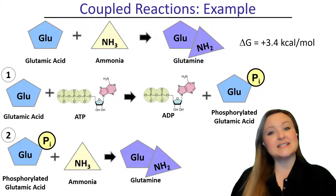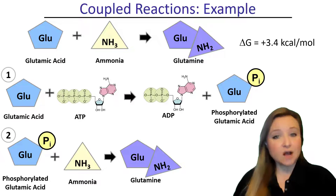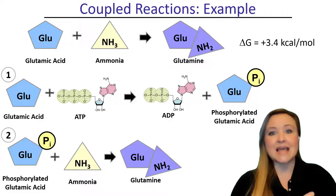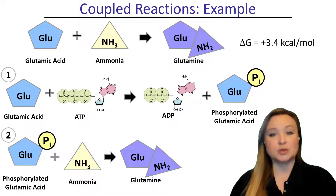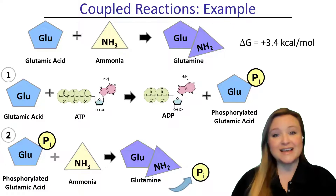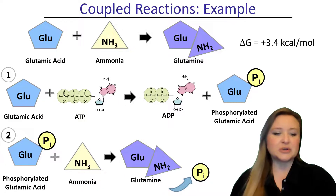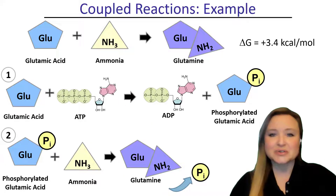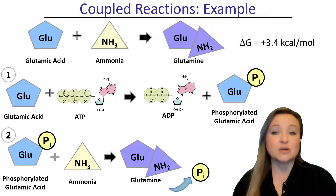The phosphorylation of glutamic acid increases its free energy, making it more reactive, so the reaction can proceed. Now the phosphorylated glutamic acid has enough free energy to react with ammonia to form glutamine. The phosphate group is released in the process — it doesn't become part of glutamine but provided the free energy so that glutamic acid and ammonia could react. Whenever endergonic reactions must occur in living things, ATP provides a coupled reaction to energize the substrate so it has enough free energy to form products.